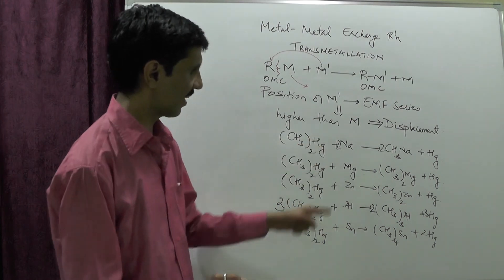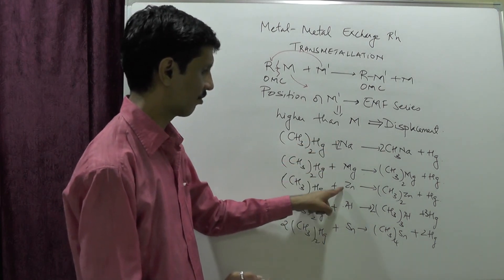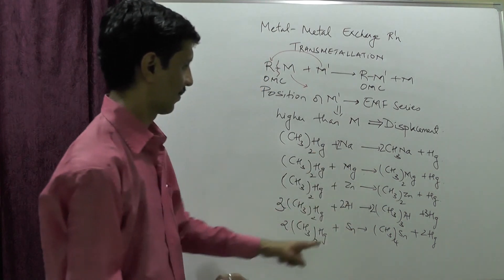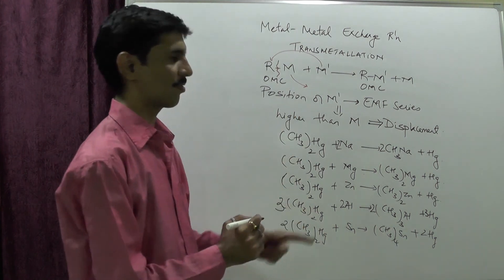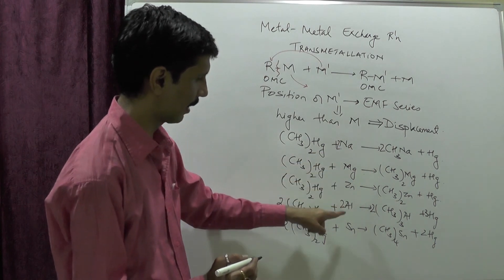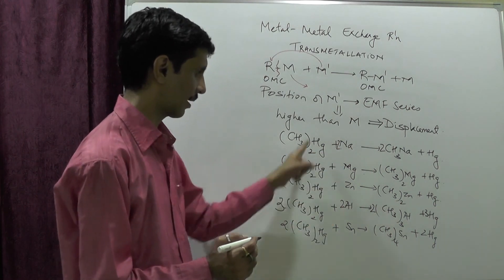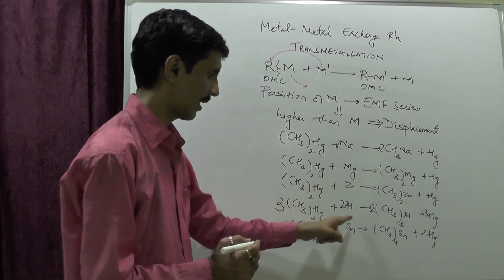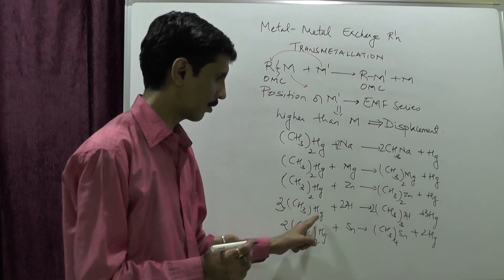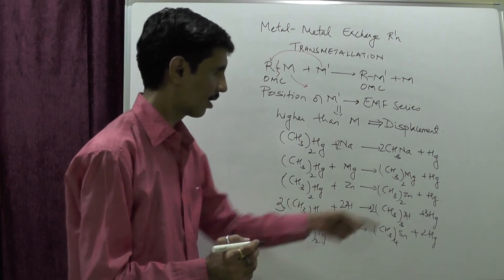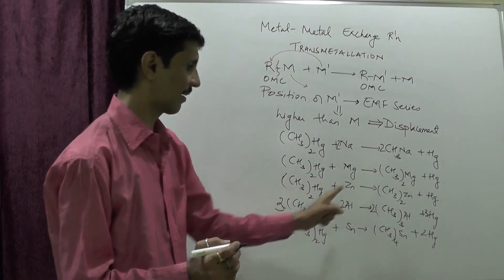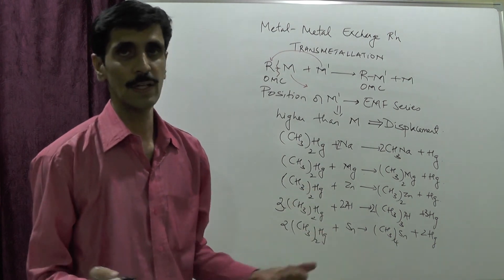The reactions shown are with sodium, magnesium, zinc, aluminium, and tin. In every case these metals are more electropositive than mercury, so they break the bond between the methyl carbon and mercury, knocking mercury off to give a new organometallic compound.